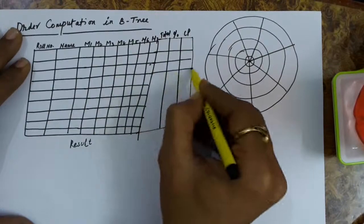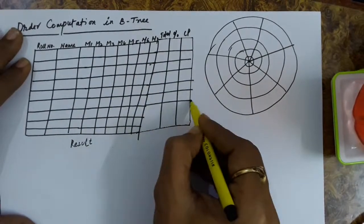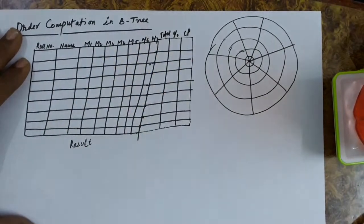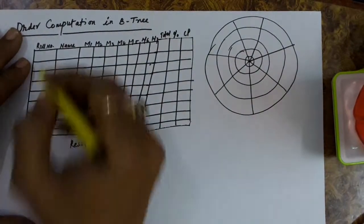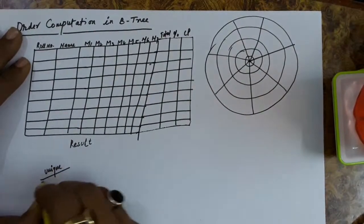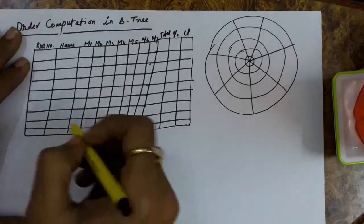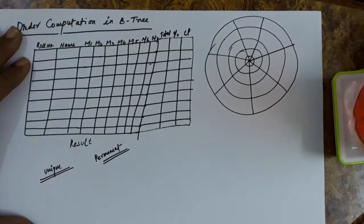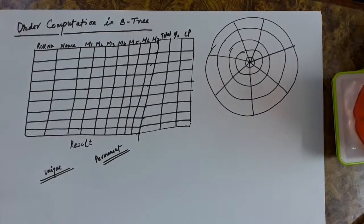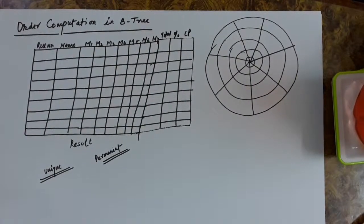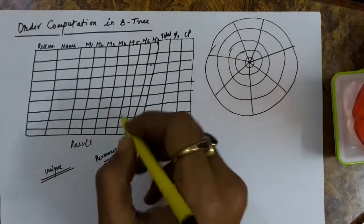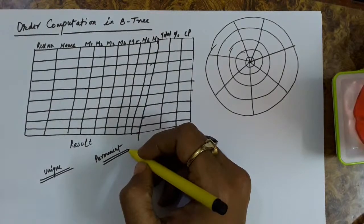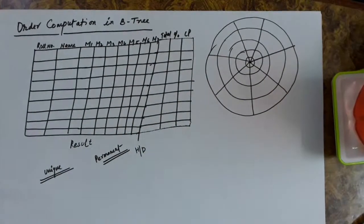By just querying the row number, you can find out all these values. This row number is unique. Another thing is that this table is a permanent table — it is not made just for once; it is designed to retain for years. So this is a permanent table stored in permanent storage, somewhere like a hard disk. Now, if you have to query this table, a B-tree is going to help us.